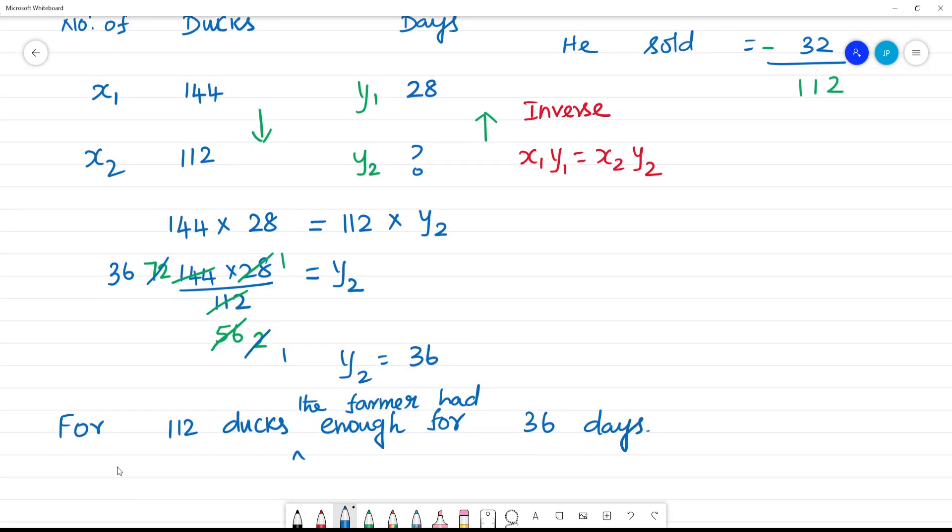When ducks decrease, what happens? 36 days - days increase. So this is inverse proportion. One quantity increases, one quantity decreases. One quantity increases, one quantity decreases. This is inverse proportion.